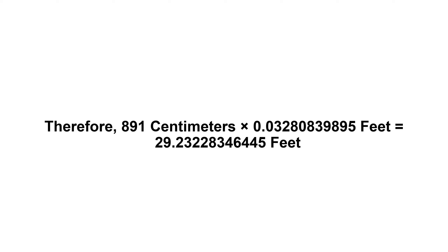eight hundred and ninety one. Therefore, eight hundred and ninety one centimeters times zero point zero three two eight zero eight three nine eight nine five feet equals twenty nine point two three two two eight three four six four four five feet.